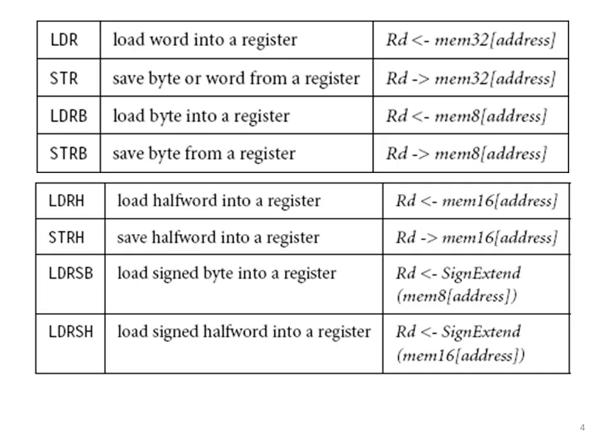Let us see the various ways of using LDR or STR. If you specify LDR, you are copying 32-bit data from memory to the register. If you say LDRB, you are copying only 8-bit data from memory to the register. If you say LDRH, you are copying half-word data from memory to register. Similarly, if you say STR, you are copying 32-bit data from register to memory. If you say STRB, you are copying 8-bit data from register to memory. If you say STRH, you are copying half-word data from register to the memory.